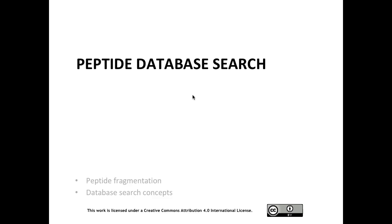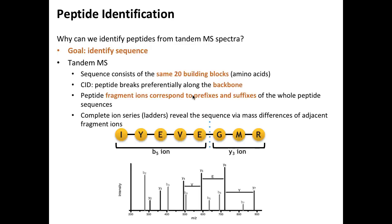Proteomics is a post-genomic method, and that is actually what we need the genome for. Fundamentally, it is very hard to identify peptides just based on their MS spectra, although in theory it doesn't sound too bad. The goal of peptide identification is pretty straightforward: we want to identify the sequence of a peptide based on its mass spectrum.